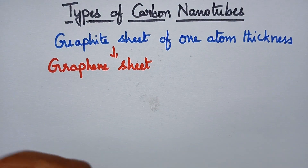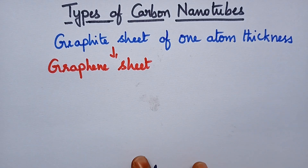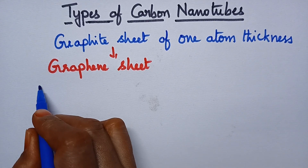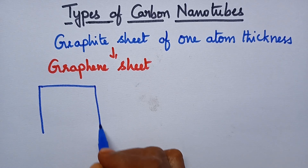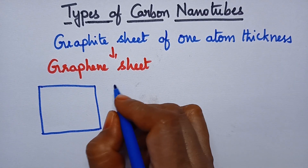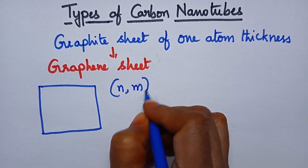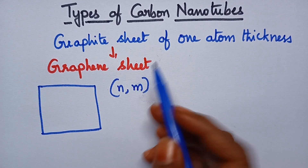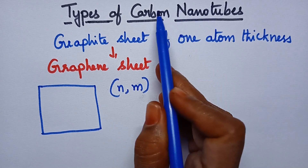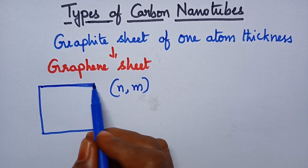Coming to the graphene sheet, it is planar in nature and in order to define a graphene sheet, we require only two indices, N and M. Coming to the formation of carbon nanotubes, they can be obtained by rolling this graphene sheet.